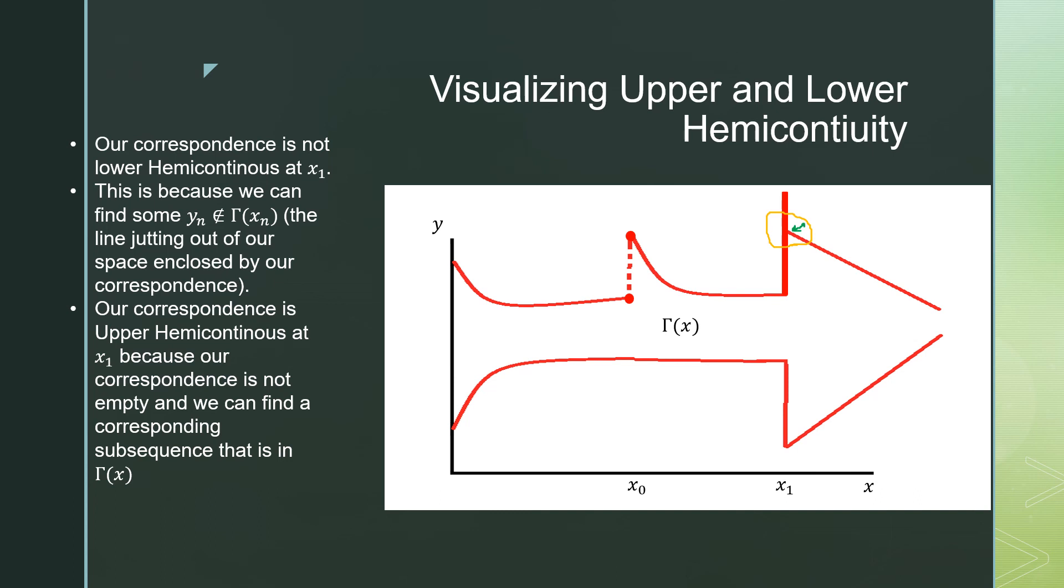Our correspondence is upper hemicontinuous at x_1 because our correspondence is not empty and we can find a corresponding subsequence that is in our constraint set Γ(x).